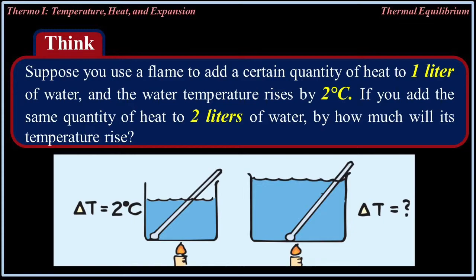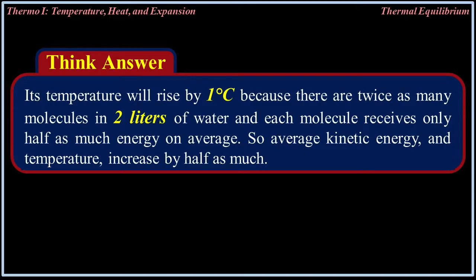Suppose you use a flame to add a certain quantity of heat to one liter of water, and the water temperature rises by two degrees Celsius. If you add the same quantity of heat to two liters of water, how much will its temperature rise? Its temperature will rise by one degree Celsius, because there are twice as many molecules in two liters of water, and each molecule receives only half as much energy on average. So average kinetic energy and temperature increase by half as much.